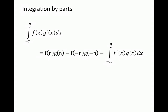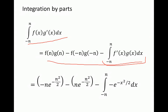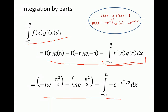Now we can use the integration by parts formula: this type of integral equals f of n times g of n minus f of negative n times g of negative n, minus the remaining integral. Plugging in our definitions, f of n is just n, and g of n is minus e to the power of negative n squared over 2 — that's where the negative sign comes from. For the f of negative n times g of negative n term: f of negative n is minus n, and g of negative n gives a positive term since minus n squared over 2 is just n squared over 2.